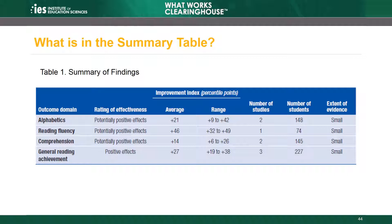The final three columns provide information about who is represented in the findings, including the number of studies that reported outcomes in each domain and the number of students with outcomes in each domain. In the alphabetics domain, there were two studies that contributed outcomes and no more than 148 students who contributed outcomes. The intervention report includes three studies rated meets WWC group design standards with or without reservations, but not all of them contributed findings in each domain. Lastly, the extent of evidence column indicates how broad the evidence base is, which helps readers understand how generalizable the evidence is. The extent of evidence in all domains in this intervention report was small due to the small number of students included in the studies that meet WWC design standards for this intervention.